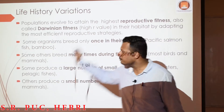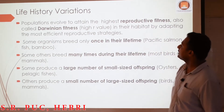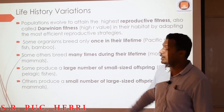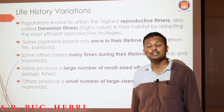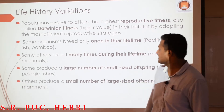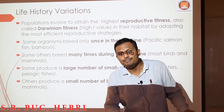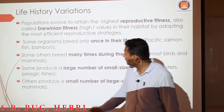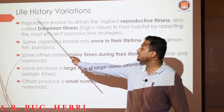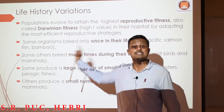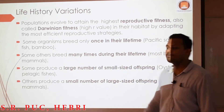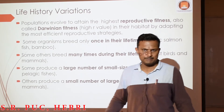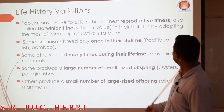So what are those reproductive strategies in order to achieve Darwinian fitness or reproductive fitness? There are different types of reproductive strategies followed by different living organisms, and that is what we study as life history. Some organisms breed only once in their lifetime — whether animals or plants.